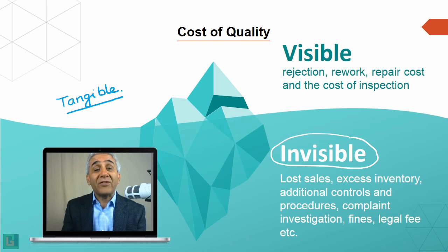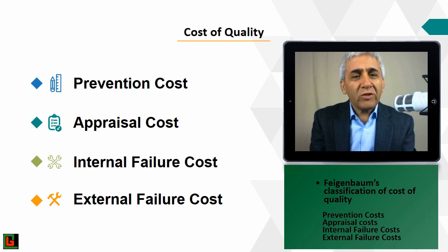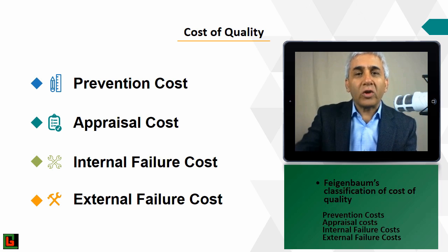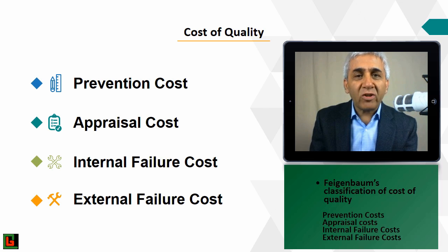To summarize: cost of quality can be broken into two big chunks — visible and invisible cost. We will break these down further. Feigenbaum classified the cost of quality into four categories: prevention cost, appraisal cost, internal failure cost, and external failure cost.